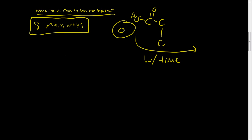So what are the eight main ways? We will discuss each way or class of the ways that cells can be injured one by one. And the first one is oxygen deprivation.